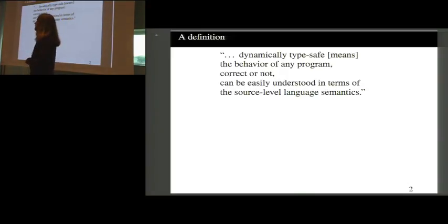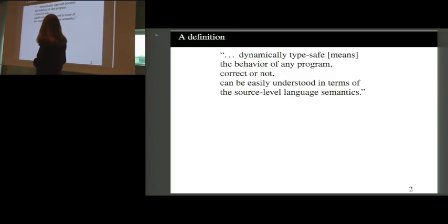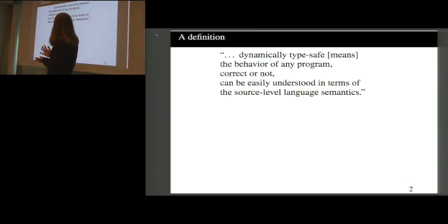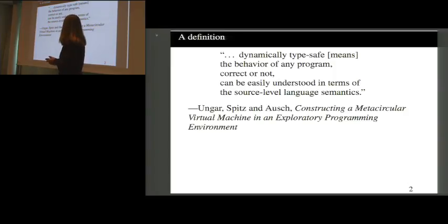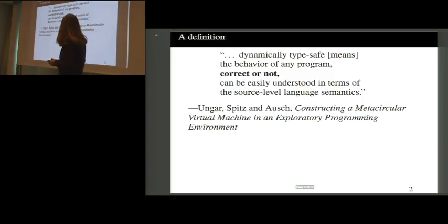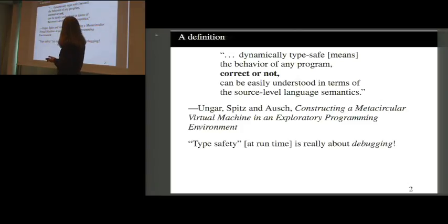This is a nice definition of what people normally mean by type safety: if we are dynamically type safe, it means that the behavior of any program, correct or not, can be understood in terms of the source-level language semantics. You might recognize it from the paper by Dave Unger and co-authors about the Klein metacircular Self VM. What's really nice is that it covers both correct and incorrect programs.